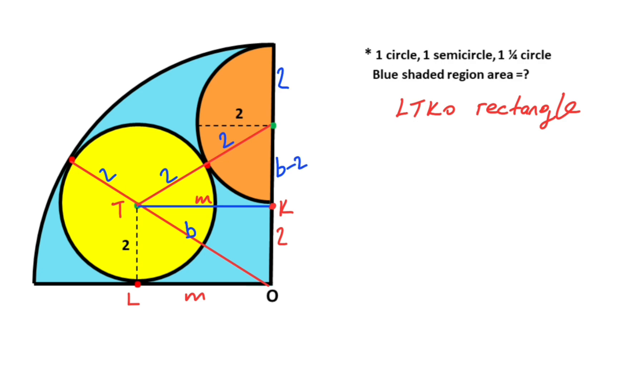Okay, therefore for this triangle, if we apply Pythagorean theorem, we get m squared plus (b minus two) whole squared equals four squared. Then for this triangle, if we apply Pythagorean theorem, we get m squared plus two squared equals b squared.